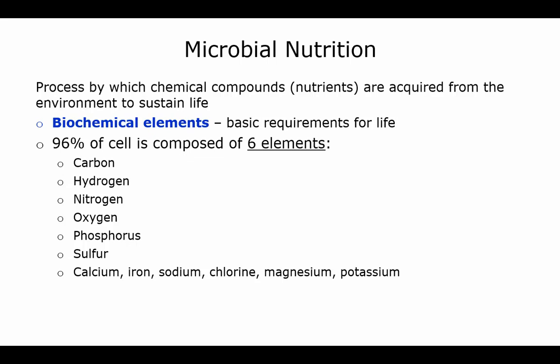All organisms have to be able to get nutrients and the process by which they get these chemical compounds or nutrients come from the environment in order to stay alive. Basically we have six elements that compose 96% of our cells that are required for life. In high school biology you may remember CHNOPS: carbon, hydrogen, nitrogen, oxygen, phosphorus, and sulfur.